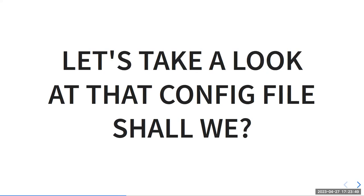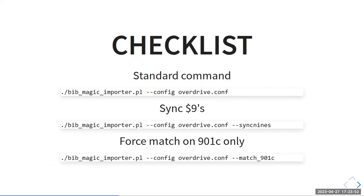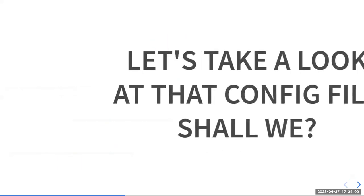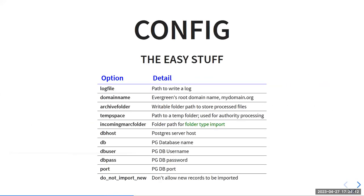Let's take a look at that config file. We're passing this config file, and you can probably imagine there's a ton of stuff going on in it. The config file has several different components. Here's the easy stuff on one slide: the log file — a place where you want the log file written as it executes. The domain name, like yourowndomainname.com.